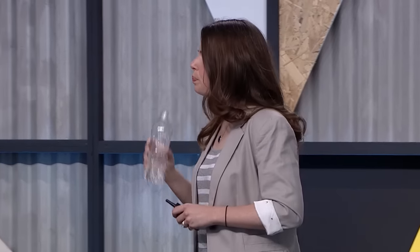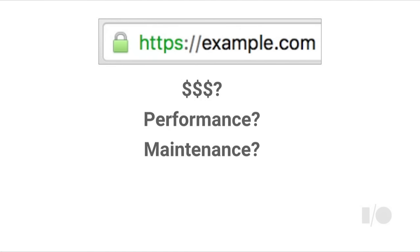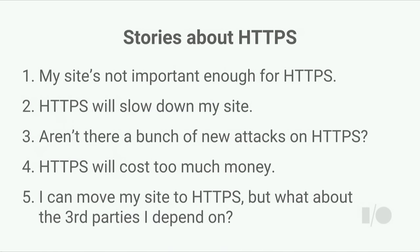So those are the three security properties we get from HTTPS. In your mind, you might have some other associations — when you see this green lock, you might think that it represents a financial burden or a performance or maintenance cost. Many of these associations were true five, ten, or fifteen years ago, but many of them are no longer true today. In this talk, I'm going to tell you five stories about HTTPS and try to separate fact from fiction — to convince you that HTTPS is possible and important for every site on the web today.